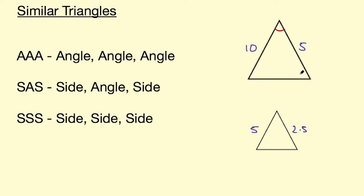And you need to know the angle in between those sides, not these angles, because they're not in between them, but this angle here between these two sides. If you know this angle, and you know that's equal, and these sides are in the same ratio, so 10 over 5 needs to be the same as 5 over 2.5. If they're in the same ratio, then you know those two triangles are similar.